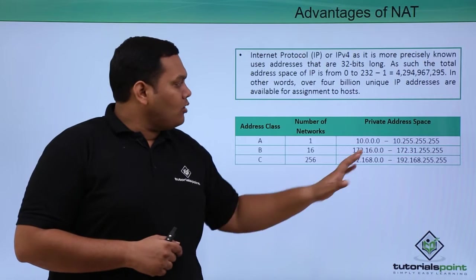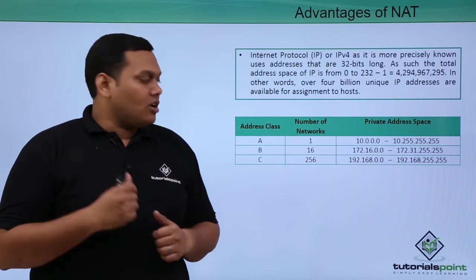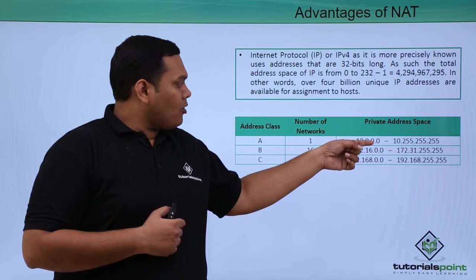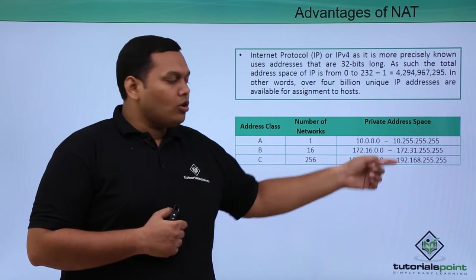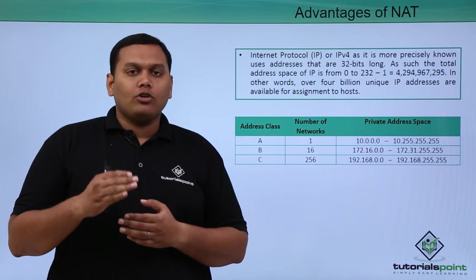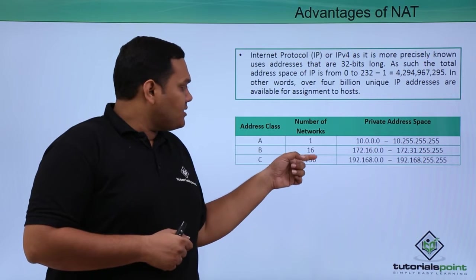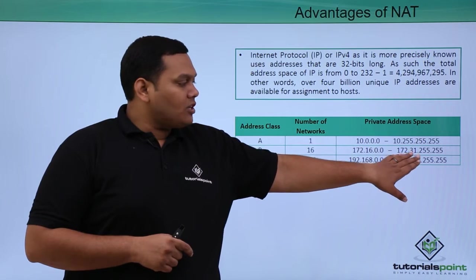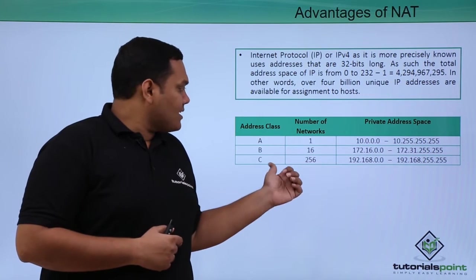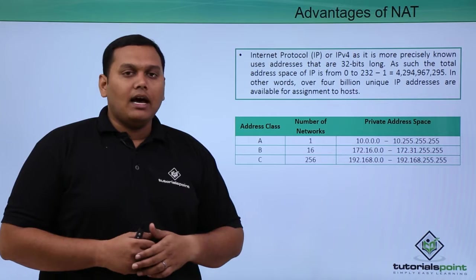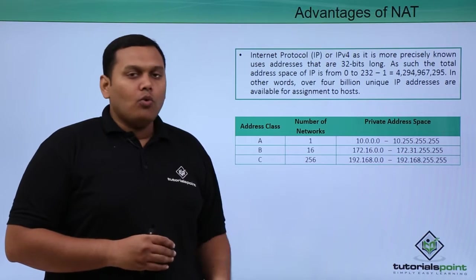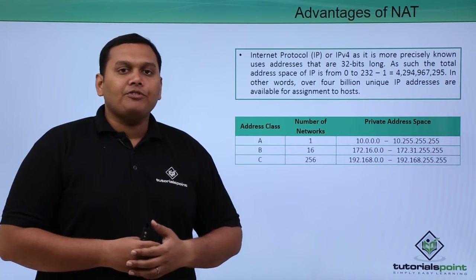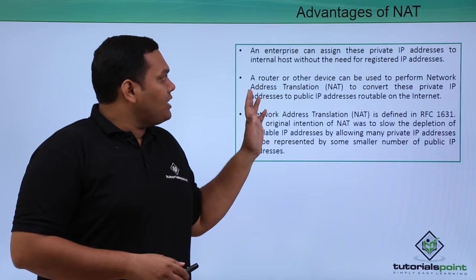The address class, number of networks, and private address space are as follows. Class A has 1 network ranging from 10.0.0.0 to 10.255.255.255. Class B has 16 networks ranging from 172.16.0.0 to 172.31.255.255. Class C has 256 networks ranging from 192.168.0.0 to 192.168.255.255.